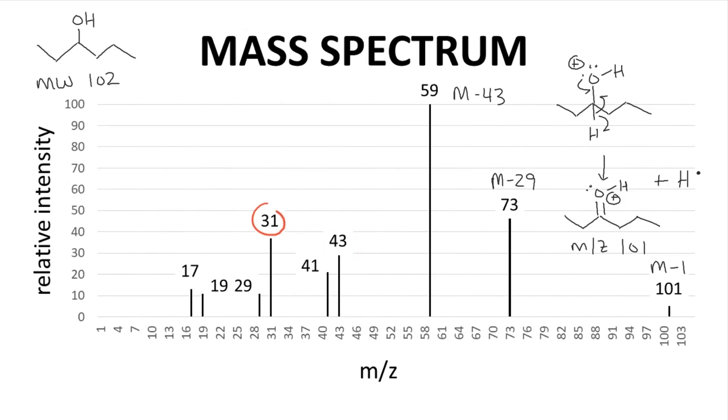31 and 41 are harder to interpret, and I'm going to skip those. I will highlight the signal at 17. This is the OH fragment. Let's redraw the parent ion.